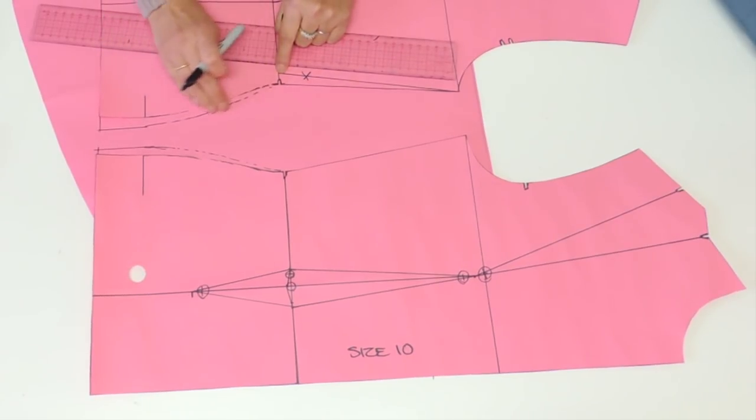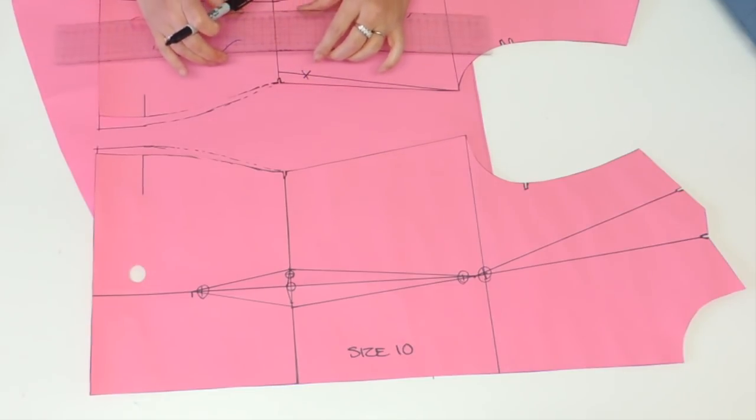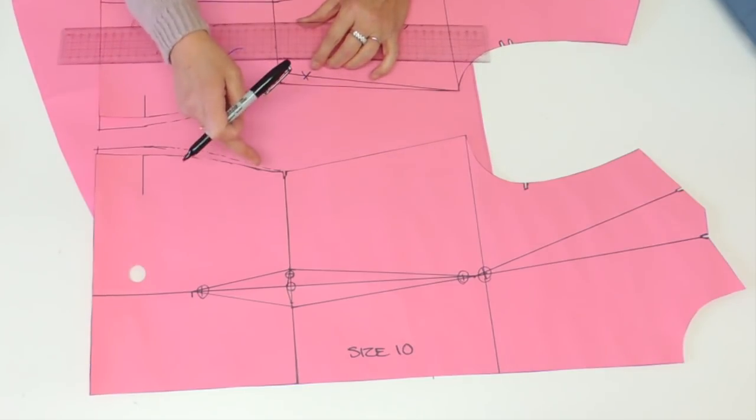But sometimes this line is getting too curved and there's another thing we could do to make it softer and better fit, smoother fit, is by creating a second dart.